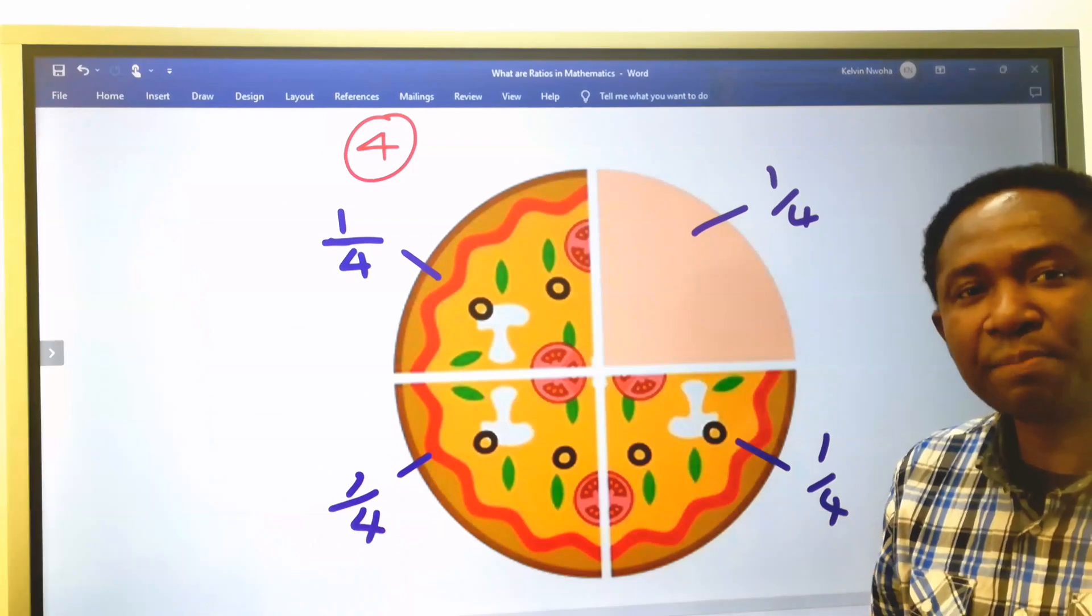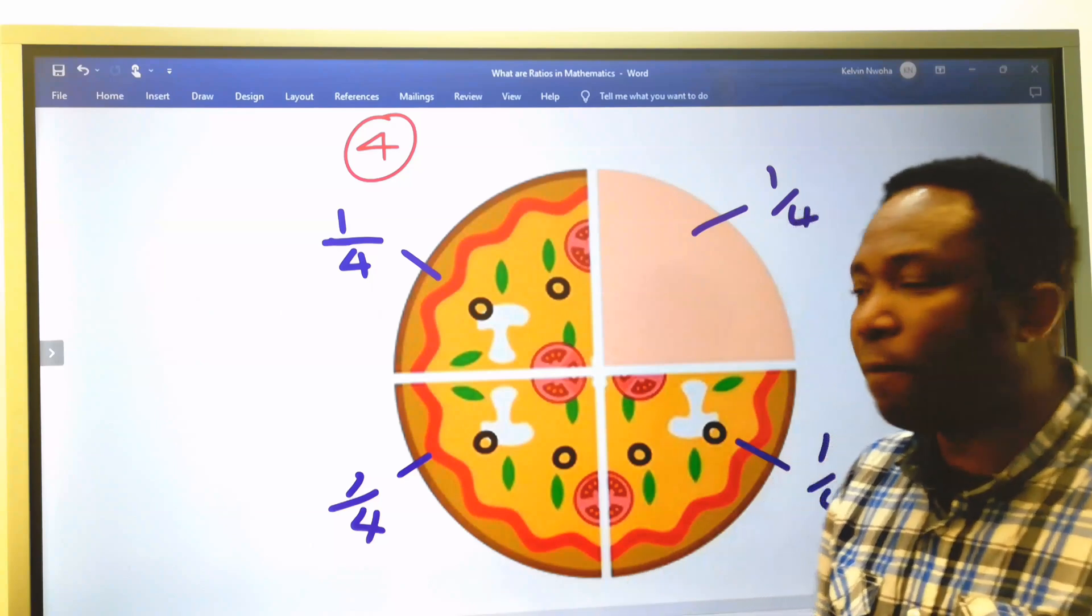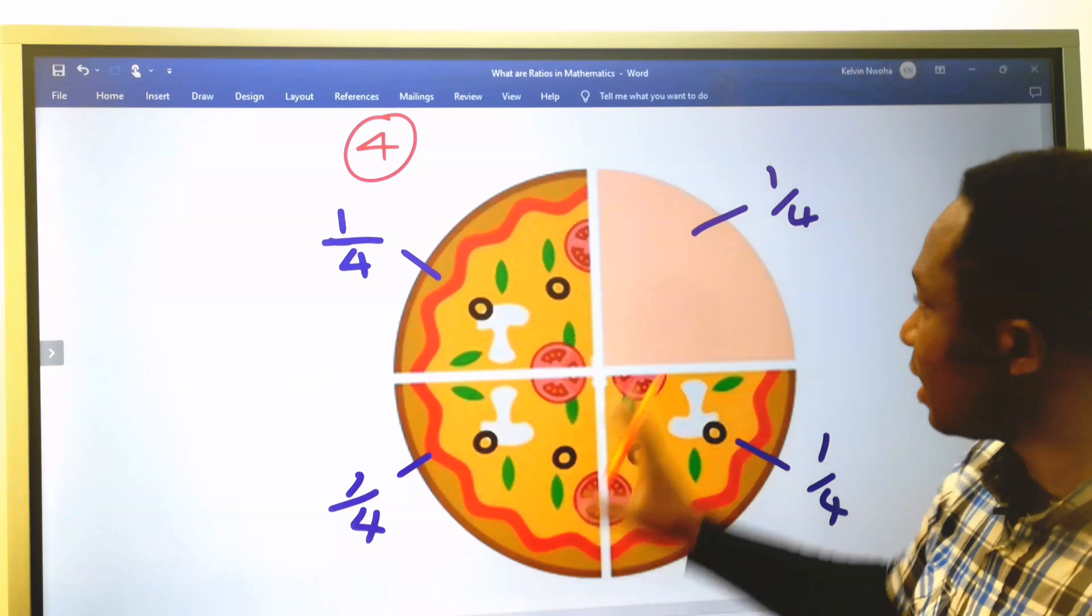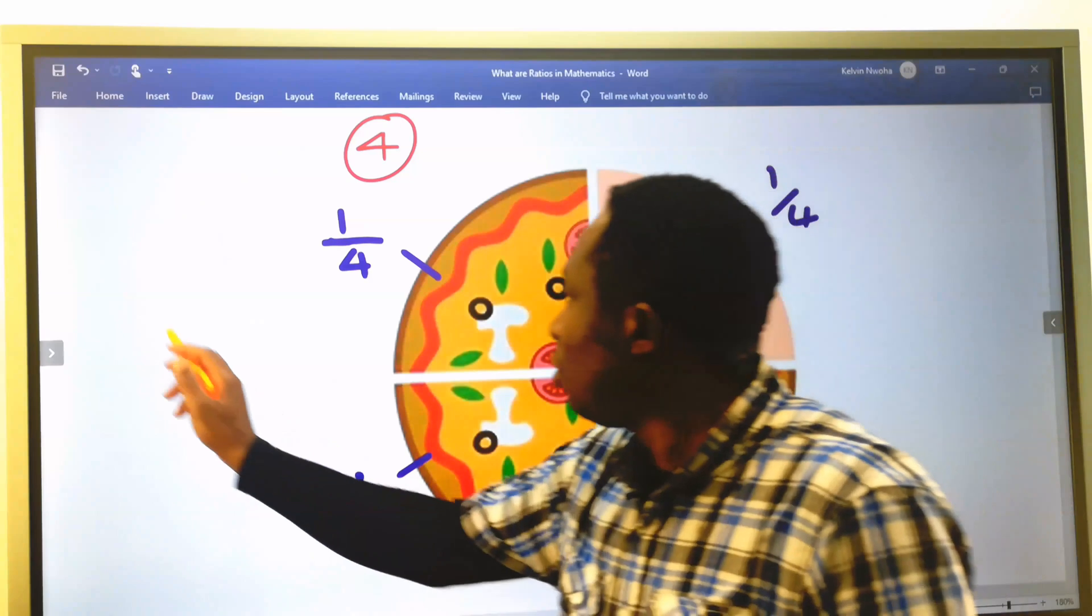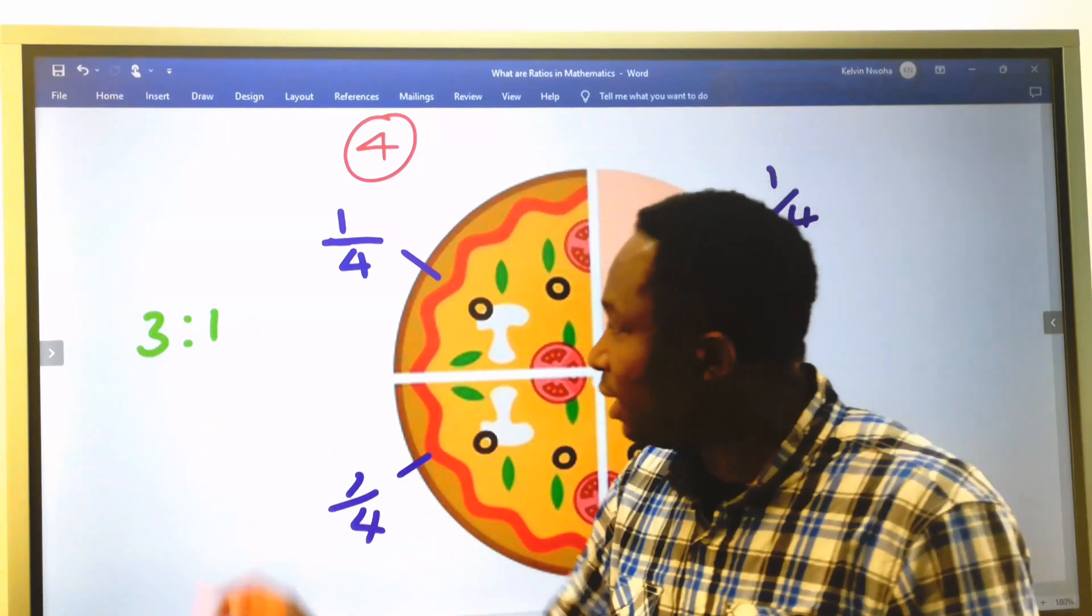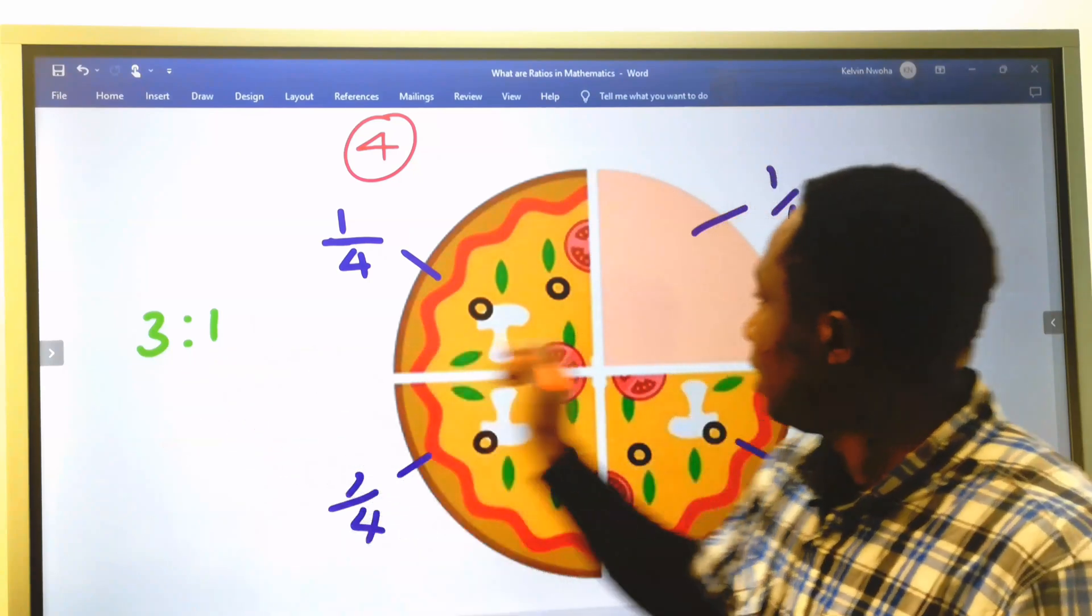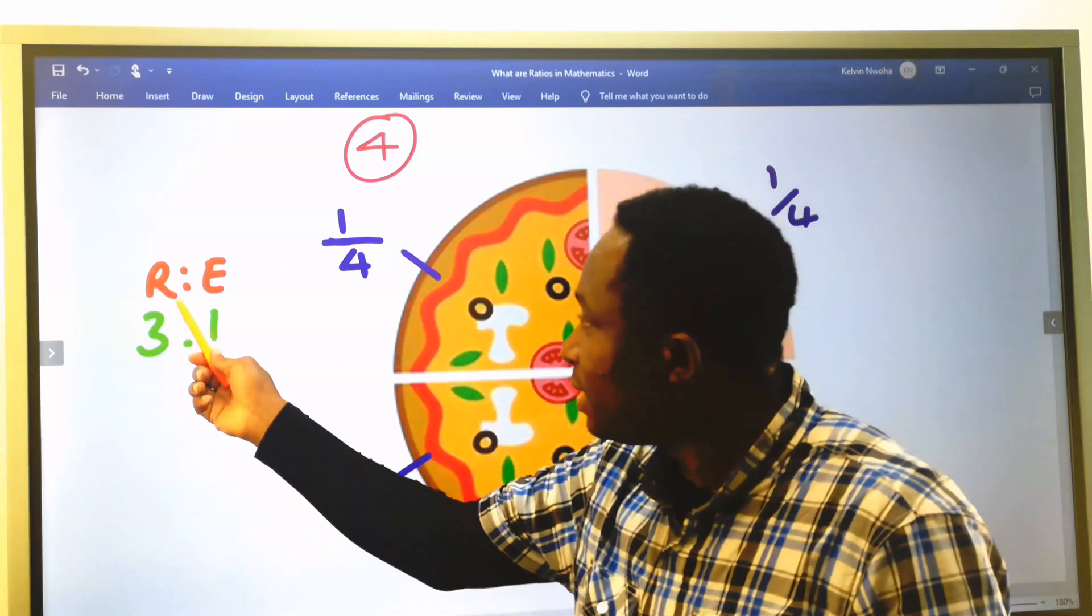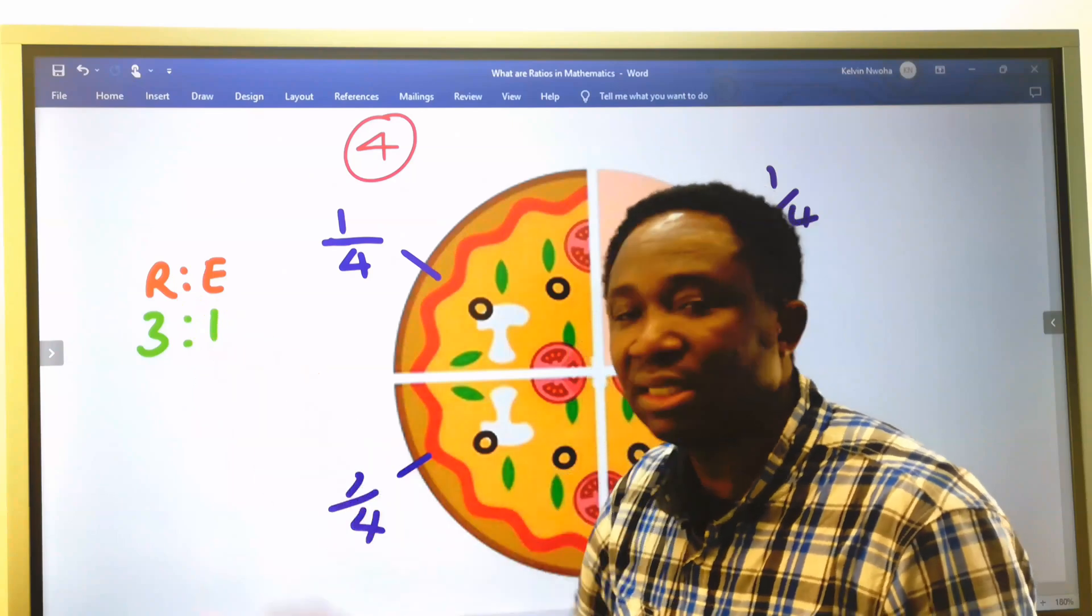But if I want to compare this remaining portion of the pizza against this part of the pizza already removed, this will be 3 to ratio 1. Here, 3 is remaining while 1 has been taken away. That is, the remaining part of the pizza to the ratio of the part that was eaten.